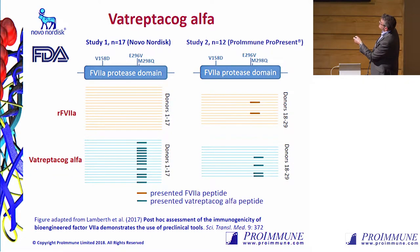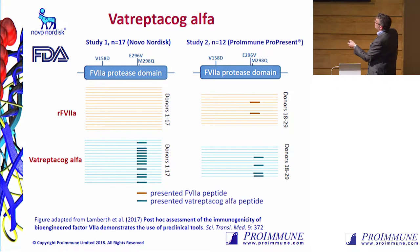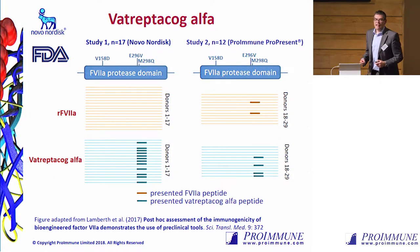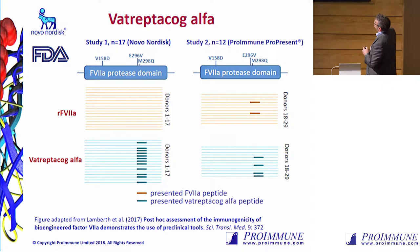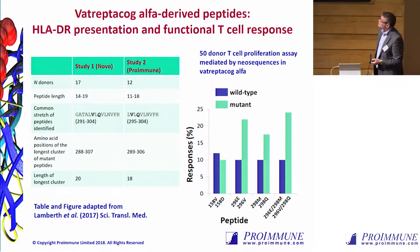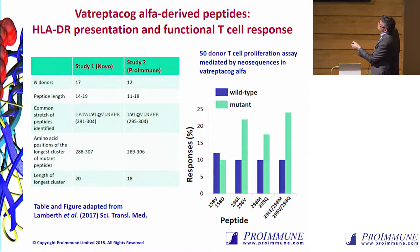This data was published in Science Translational Medicine in 2017. A parallel study was carried out internally at Novo and outsourced to ProImmune using our ProPresent assay — completely independently done at Novo as well. We're comparing native Factor 7a to the Treptocog Alpha, with different donors used at each site. The three substitution points — valine to D, E to V, and M to Q — are shown at specific positions; the final two C-terminal mutations are only two amino acids apart. Essentially, these bars indicate antigen presentation identified from Factor 7a, and it's these point mutations which are highly presented in the Treptocog Alpha molecule. The numbers of donors, peptide lengths, core sequences, and amino acid positions were essentially the same in both studies — the data is absolutely reproducible using completely independent donors.